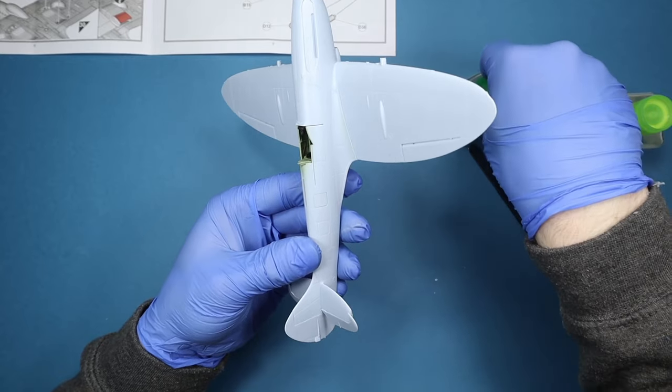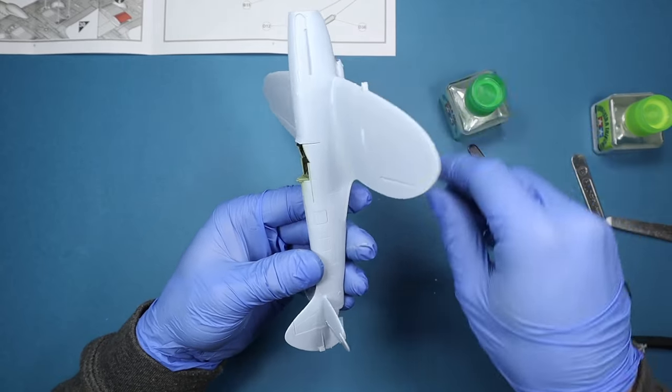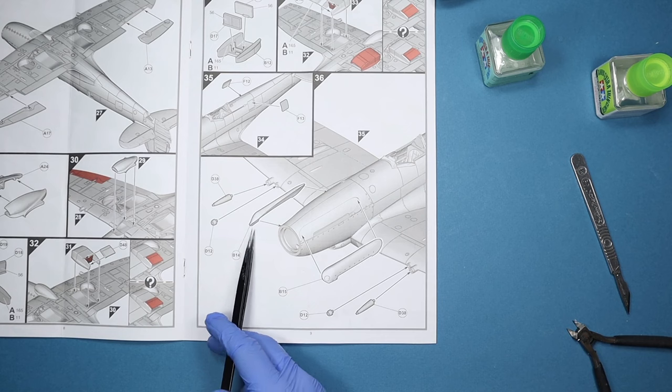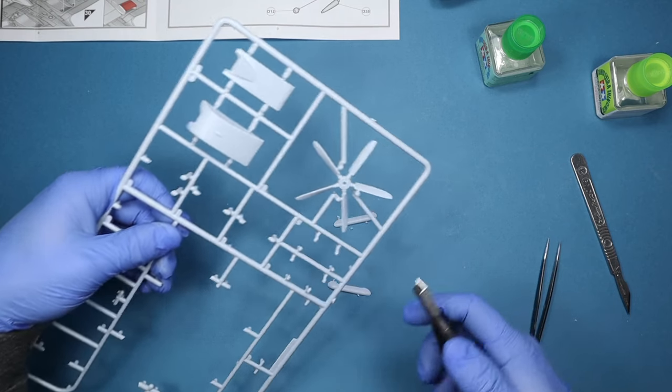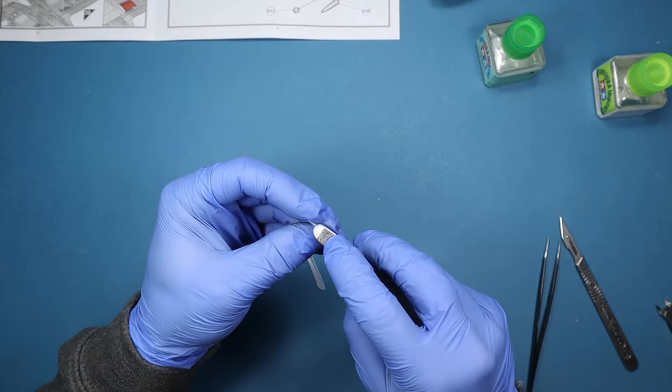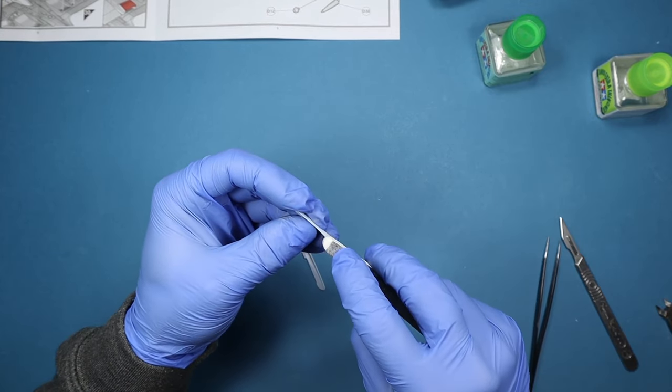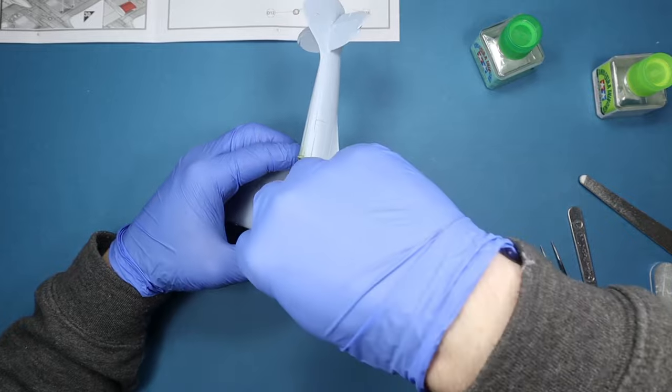Now use the same techniques for the cowling bulges over the engine. These are added to Spitfires to fit the larger Griffon engine.